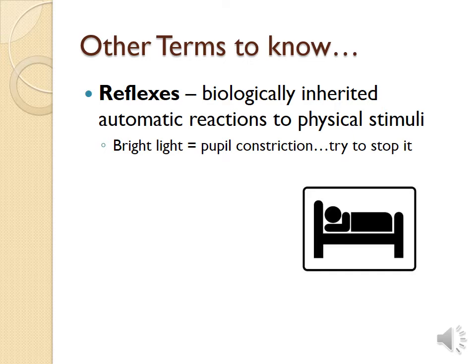Other terms you should know related to this: reflexes. These are biologically inherited automatic reactions to an external or physical stimuli. If I were to throw something directly at your face and you couldn't block it with your hands, chances are you would flinch or close your eyes. If I take a bright light and flash it in your eye, your pupil constricts. A reflex is an automatic programmed reaction — we have no choice in it.